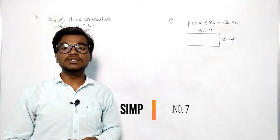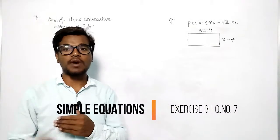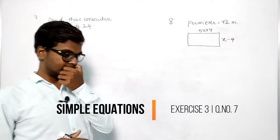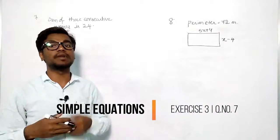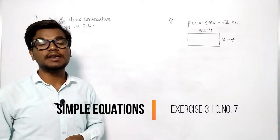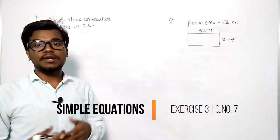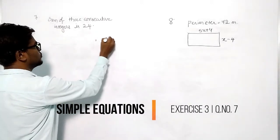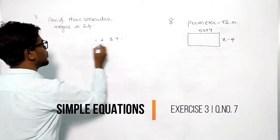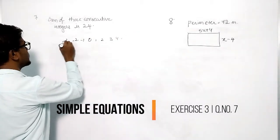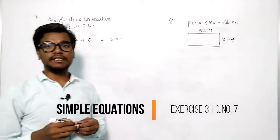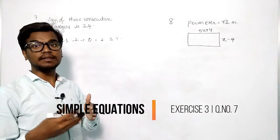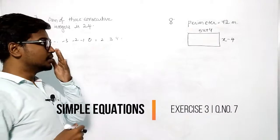Consecutive integers normally increase one by one — first, second, third, fourth, fifth, and so on. The format for integers is: one, two, three, four, five and so on, and also zero, minus one, minus two, minus three, and so on. This is the format for integers.